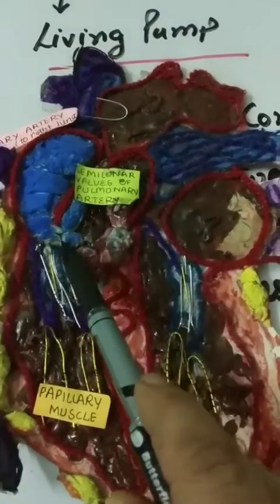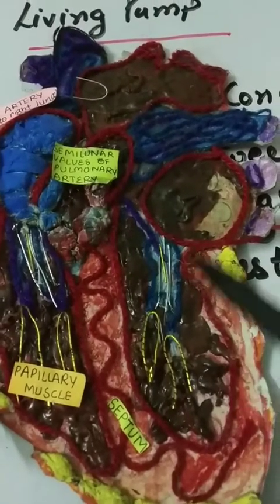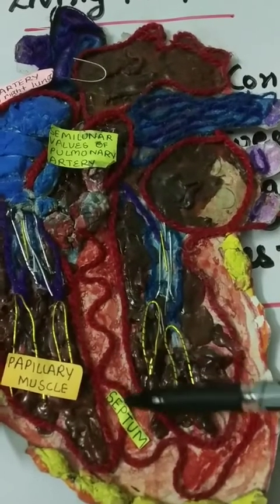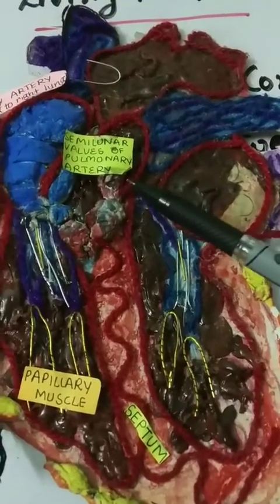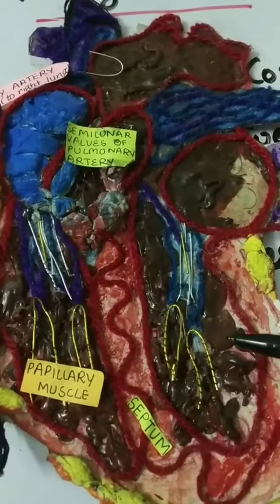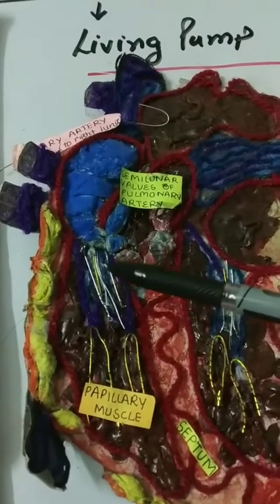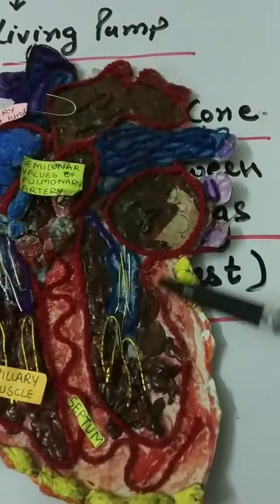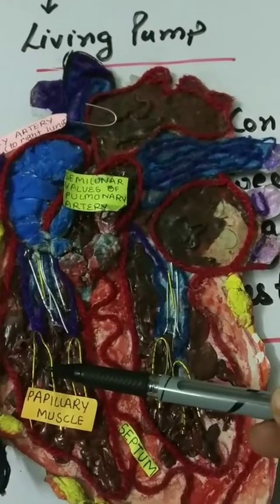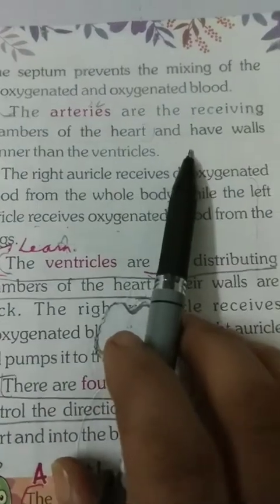The heart has four chambers — two auricles and two ventricles. The heart is divided into two halves by a thick muscular septum. Each half has an auricle at the top and a ventricle below. The right half of the heart has deoxygenated blood, while the left half has pure oxygenated blood. The septum prevents the mixing of deoxygenated and oxygenated blood.